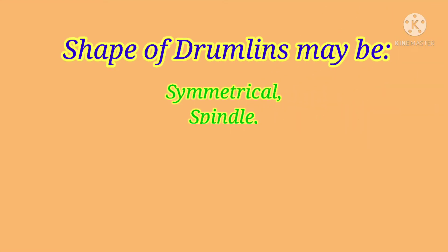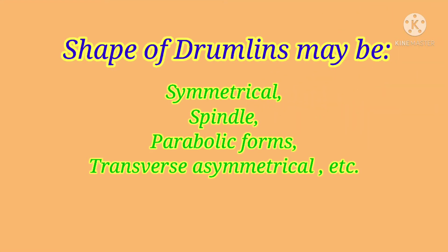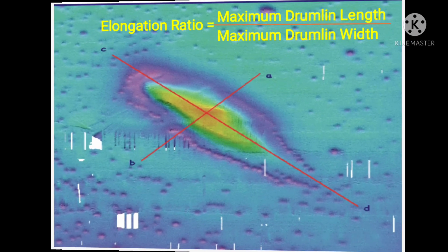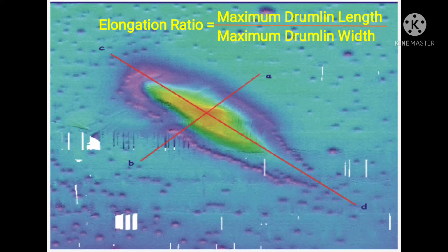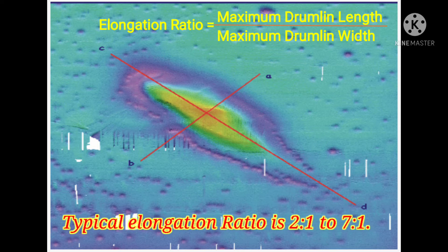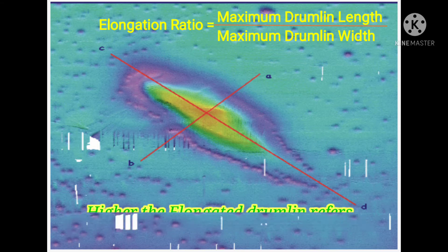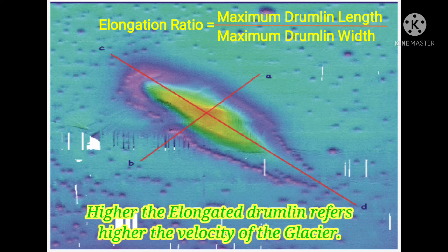Drumlins are made in different sizes and shapes. They may be symmetrical, parabolic forms, and transverse asymmetrical. A common measure of their shape is the elongation ratio, which we can measure with maximum drumlin length divided by maximum drumlin width. Typical elongation ratios are 2:1 to 7:1. More elongated drumlins indicate a lower velocity, and shorter elongated drumlins indicate a higher velocity of the glacier.